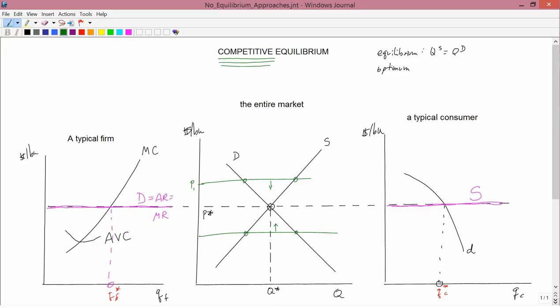In our theory of the firm, we never said the firm decides to produce QF, and then he finds he can't sell it, and therefore he decides to reduce the price down to something like this. That was not in our theory of the firm at all. Our theory of the firm had a fixed price, and the firm reacting to that and deciding on an optimal quantity. End of story.